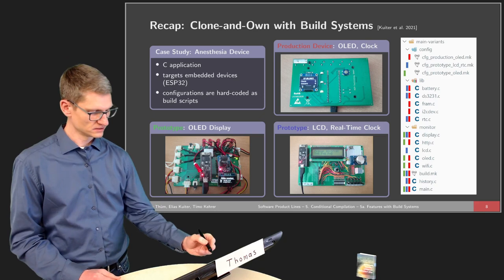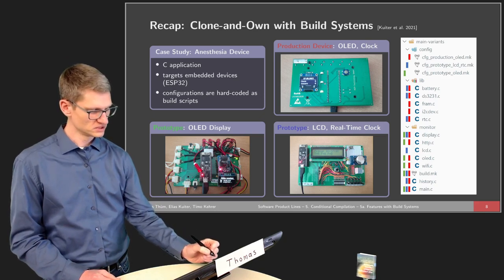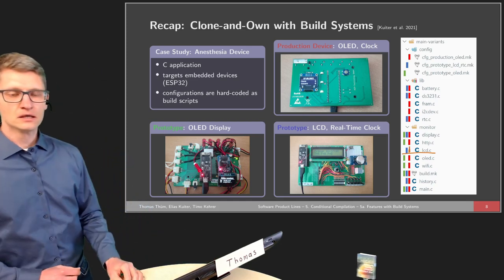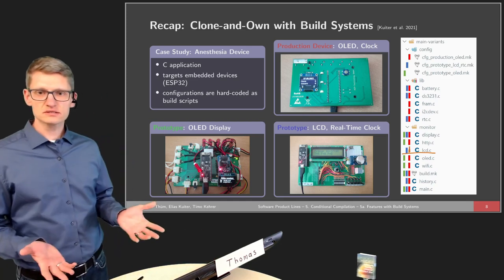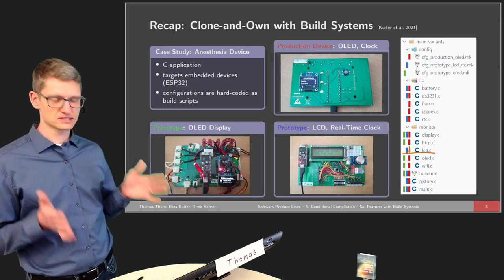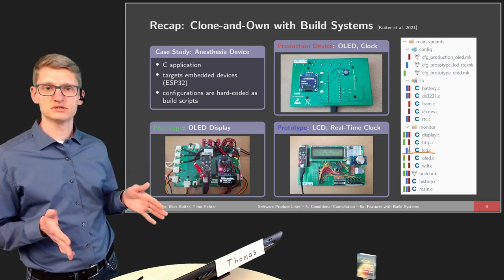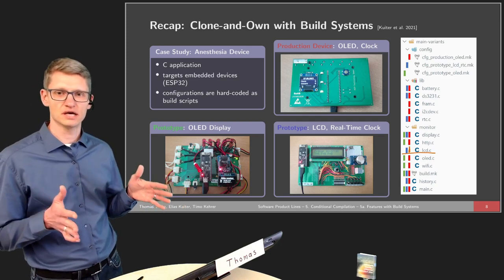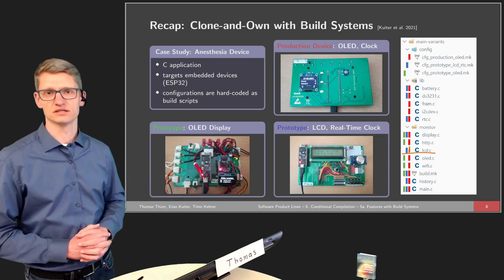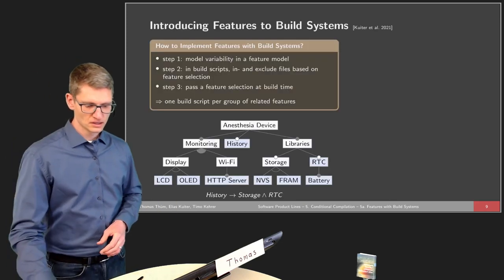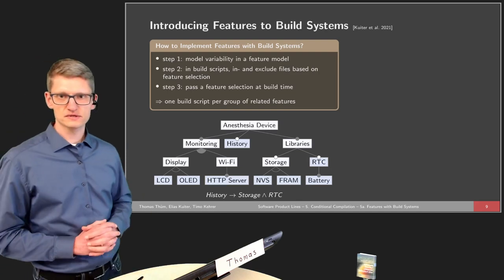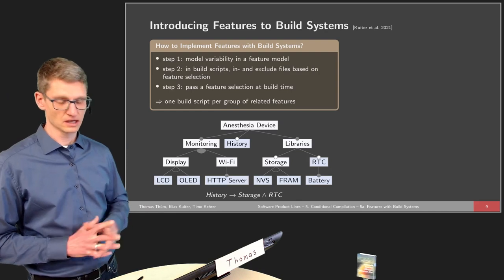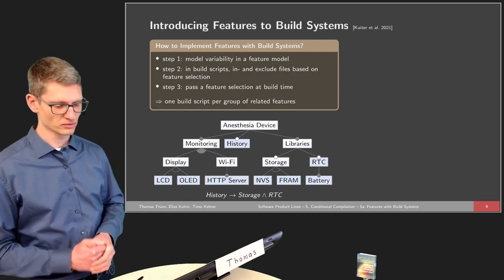A third clone of the system has OLED and clock but no display — a different configuration with other features selected or not. For instance, the LCD is missing here. This system is interesting because the same system was built once using clone and own with build systems, and also with build systems when realizing the vision of features. This principle will later also be applied for larger projects like Linux and operating systems.